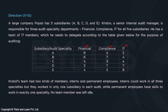Christopher's team had two kinds of members: interns and permanent employees. Interns could work in all three specialities but worked in only one subsidiary in each audit, while permanent employees have skills to work in exactly one speciality. No team member was left idle. He has a total of 17 members and the distribution is given — there is nothing else we can conclude from here, so we can jump to the questions.